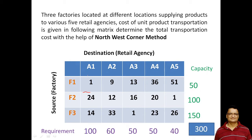Retail agency A1 has a requirement of 100 units, A2 has a requirement of 60 units, A3 has a requirement of 50 units, A4 has a requirement of 50 units, and A5 has a requirement of 40 units. The total summation of all capacities of F1, F2, and F3 is 300. At the same time, the total summation of requirements of A1, A2, A3, A4, and A5 is also 300.